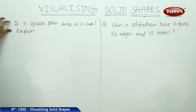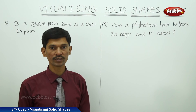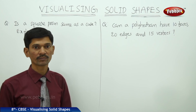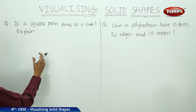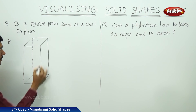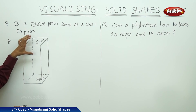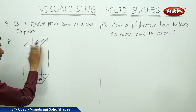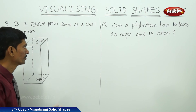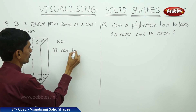Is a square prism the same as a cube? A prism is named by the shape of its base. If the base is a square, it is a square prism — but a square prism may be a cuboid where the length and width are not the same. So a square prism is not necessarily a cube. The answer is no — it can be a cuboid.